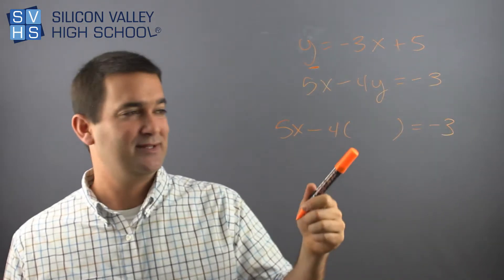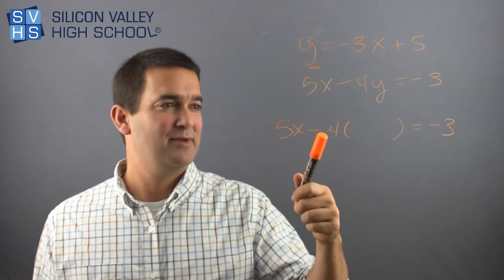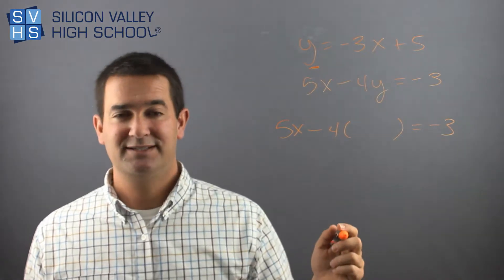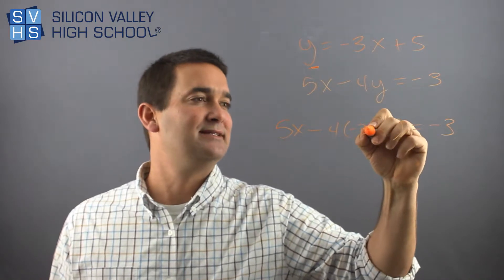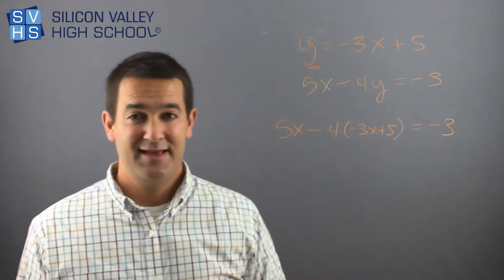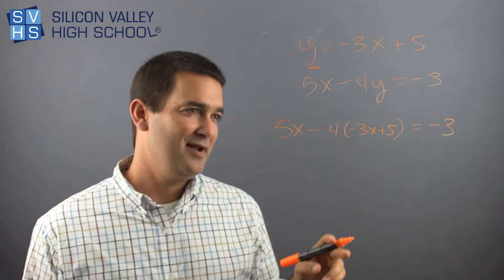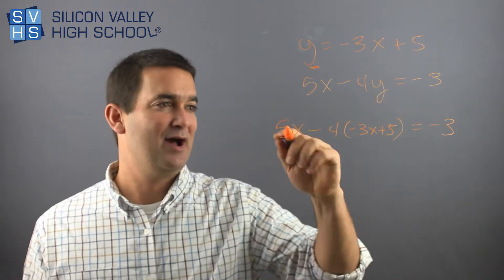I recommend you always do it this way, that way you don't mess up. Negative 4, put an empty parentheses, and then later say, okay, y is this, negative 3x plus 5. And then it comes down to how good are you at algebra? Because now I'm basically done.